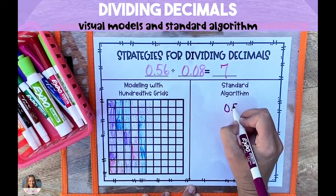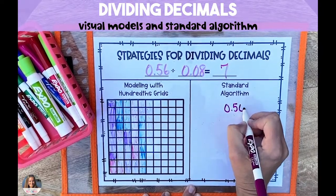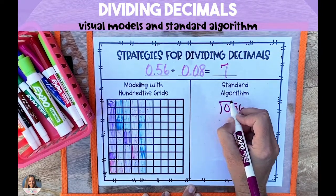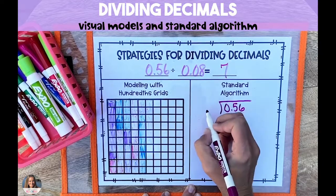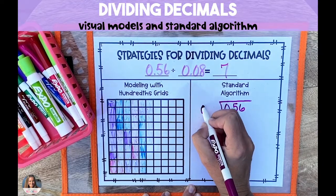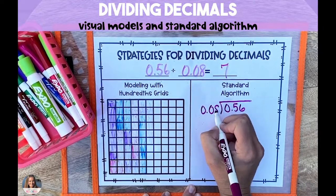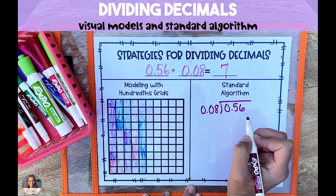To solve this using the standard algorithm, we're going to take our expression and rewrite it as a long division problem. When you're dividing a decimal number by another decimal number, you don't want to have a decimal in the divisor.